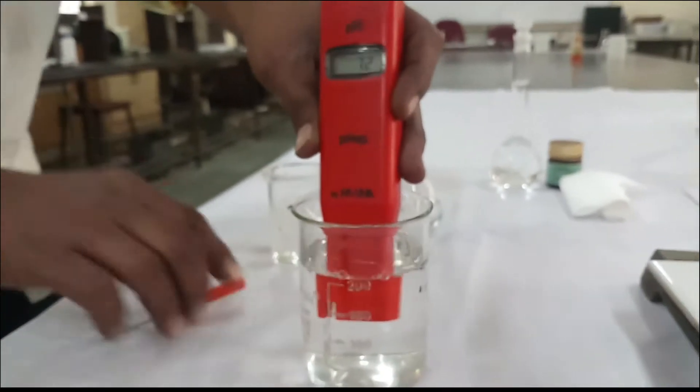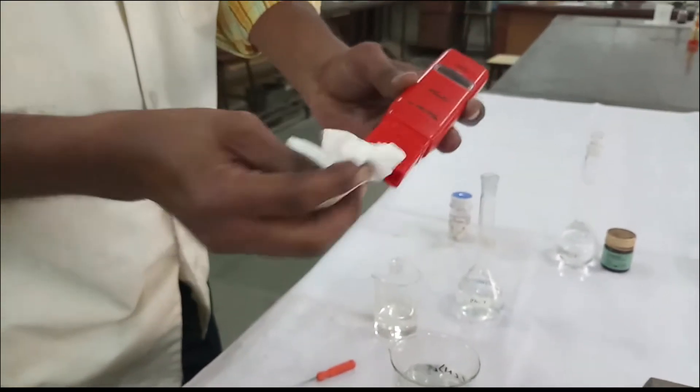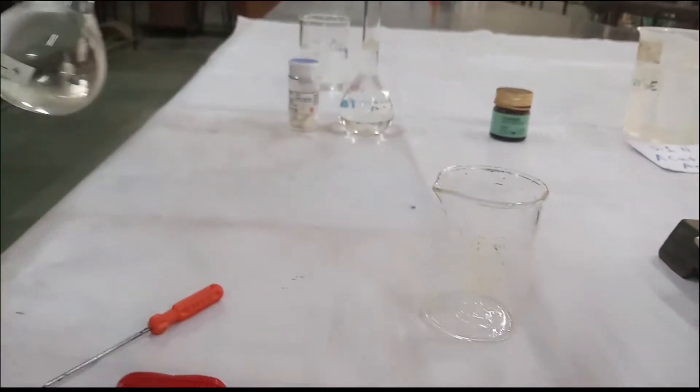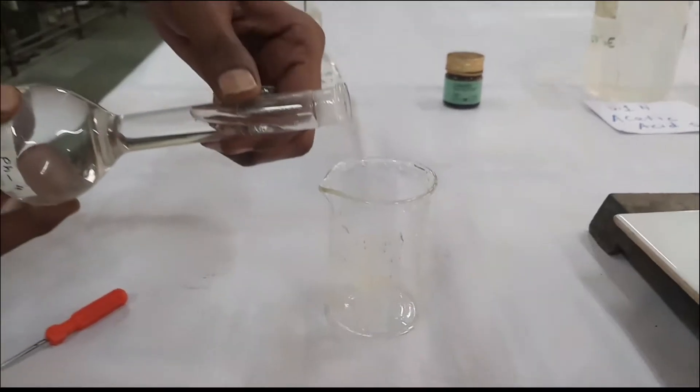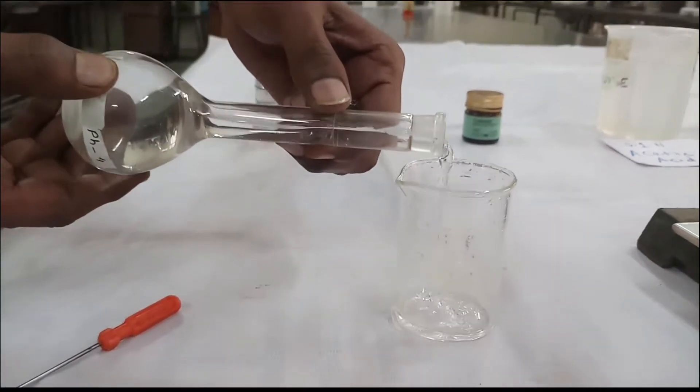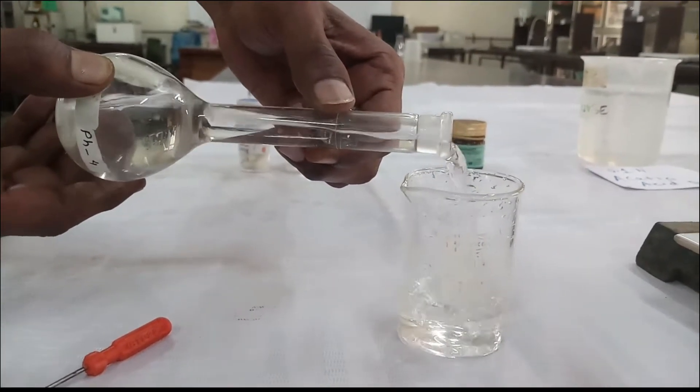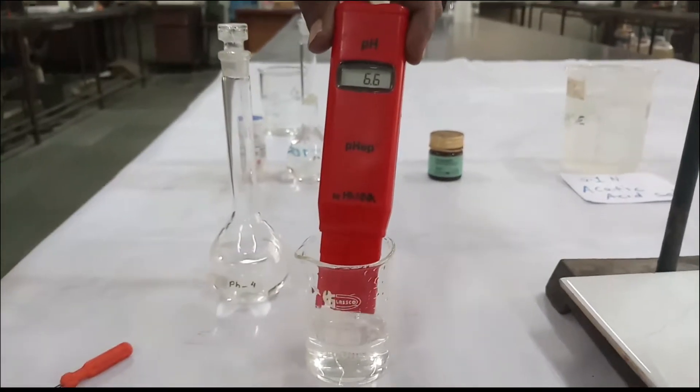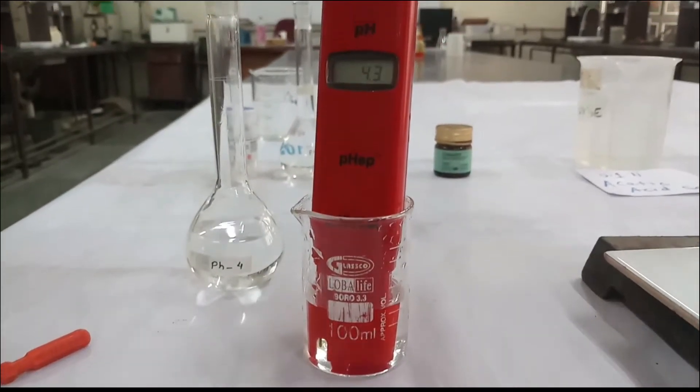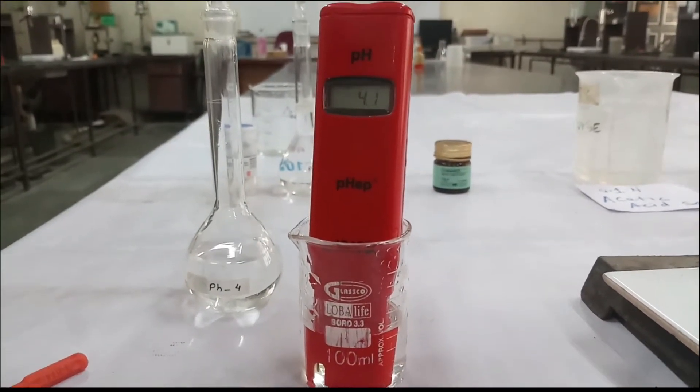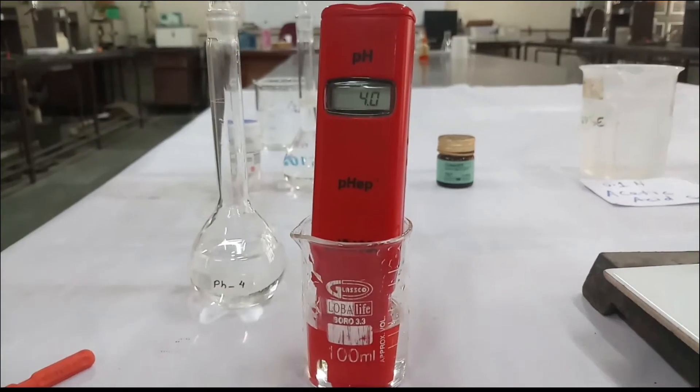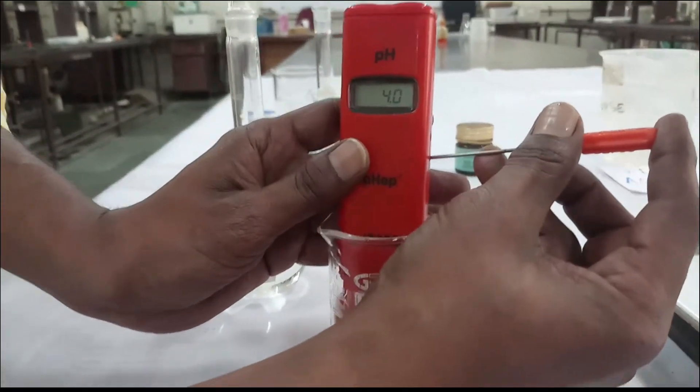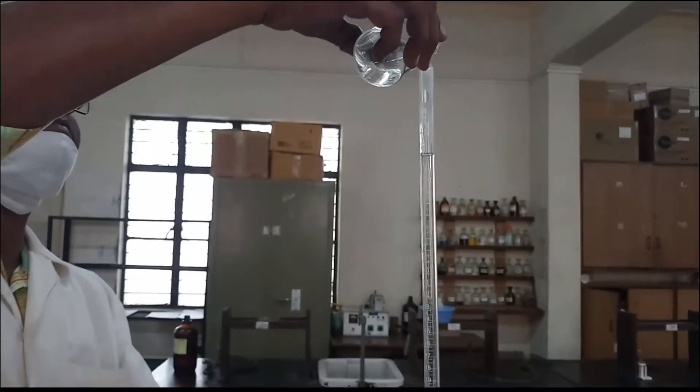Wash the pH meter with distilled water. Wipe it with tissue paper. And then in another clean beaker, take pH 4 buffer solution. Dip the pH meter in that buffer solution. If it won't read 4.0, adjust it with the other knob, that is the slope knob. So adjust it to 4.0.